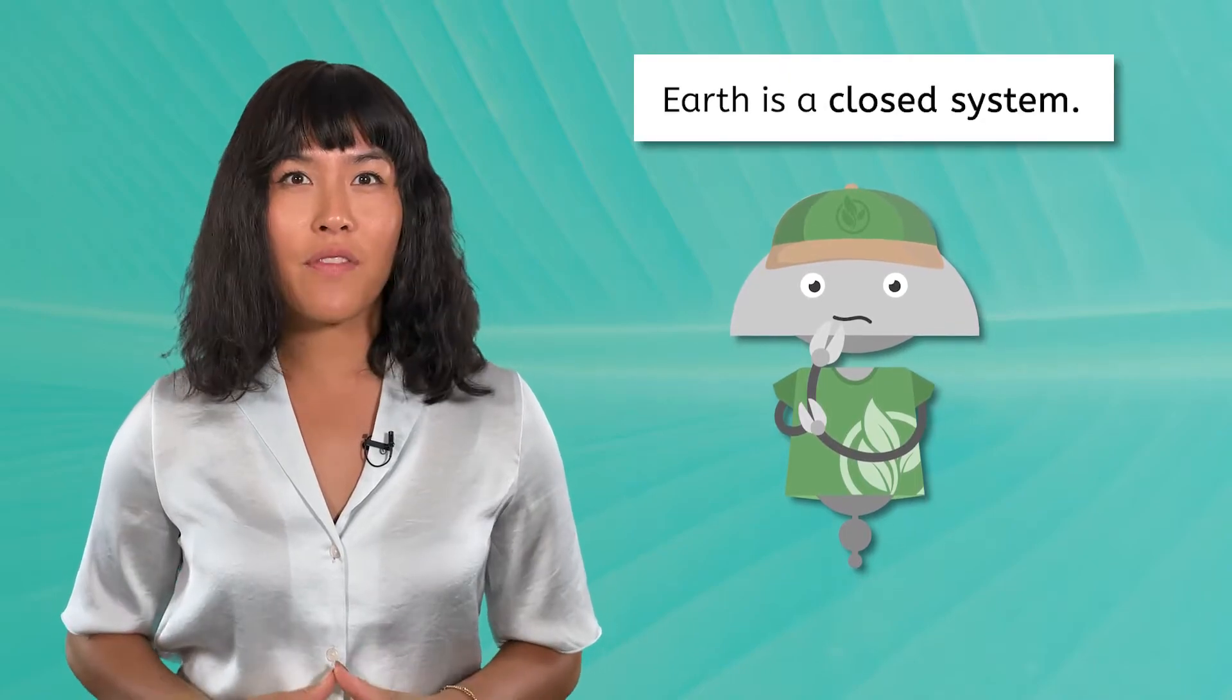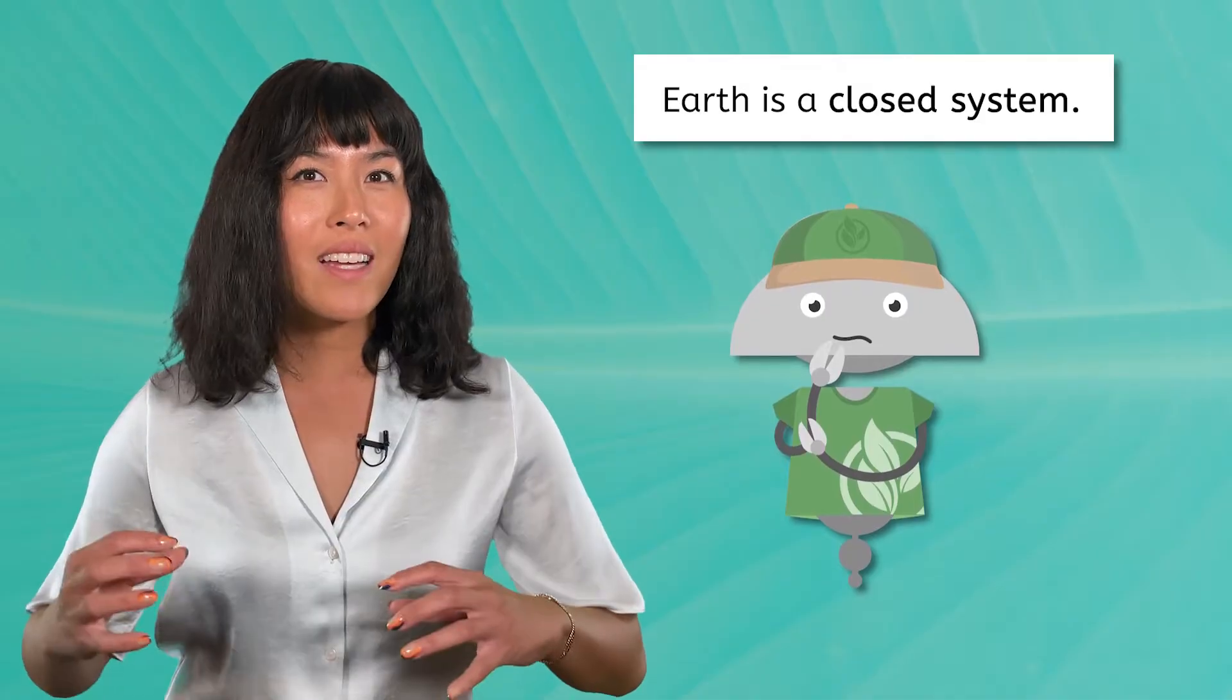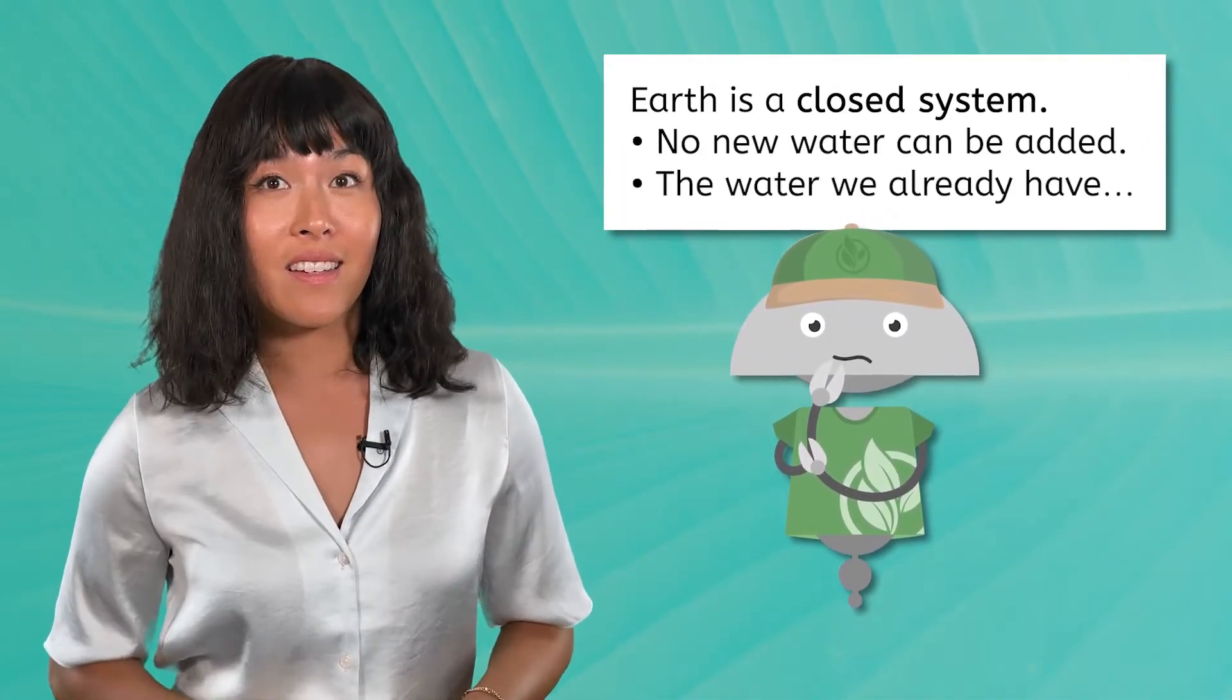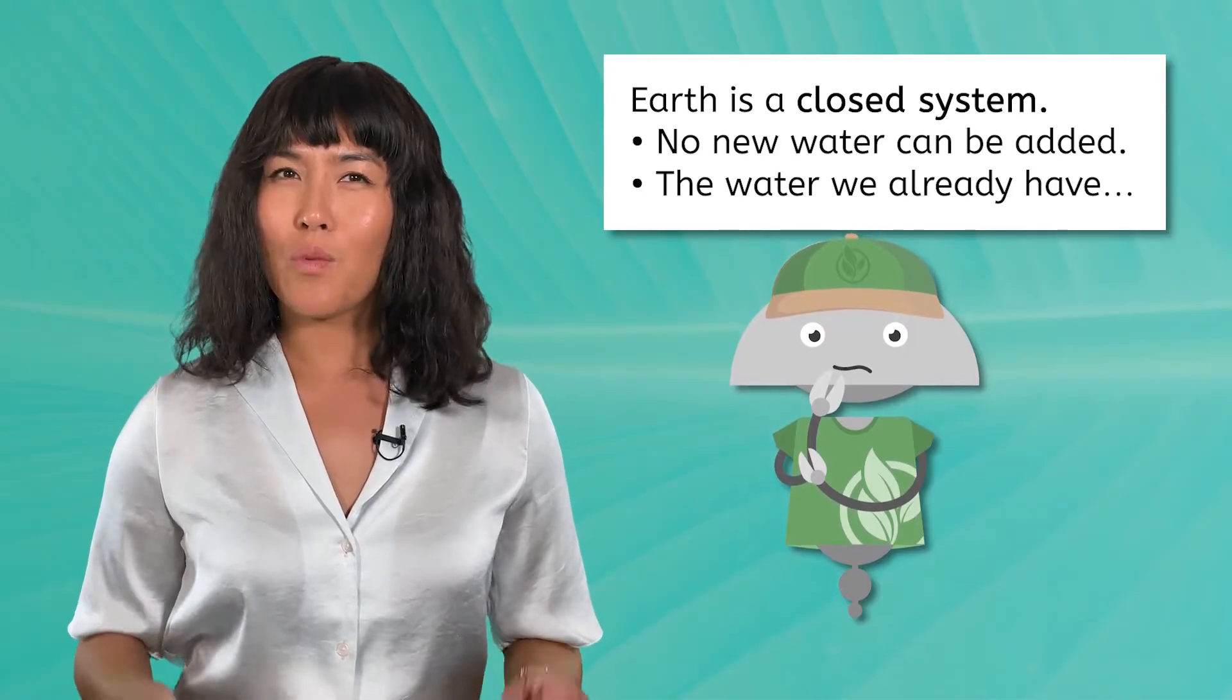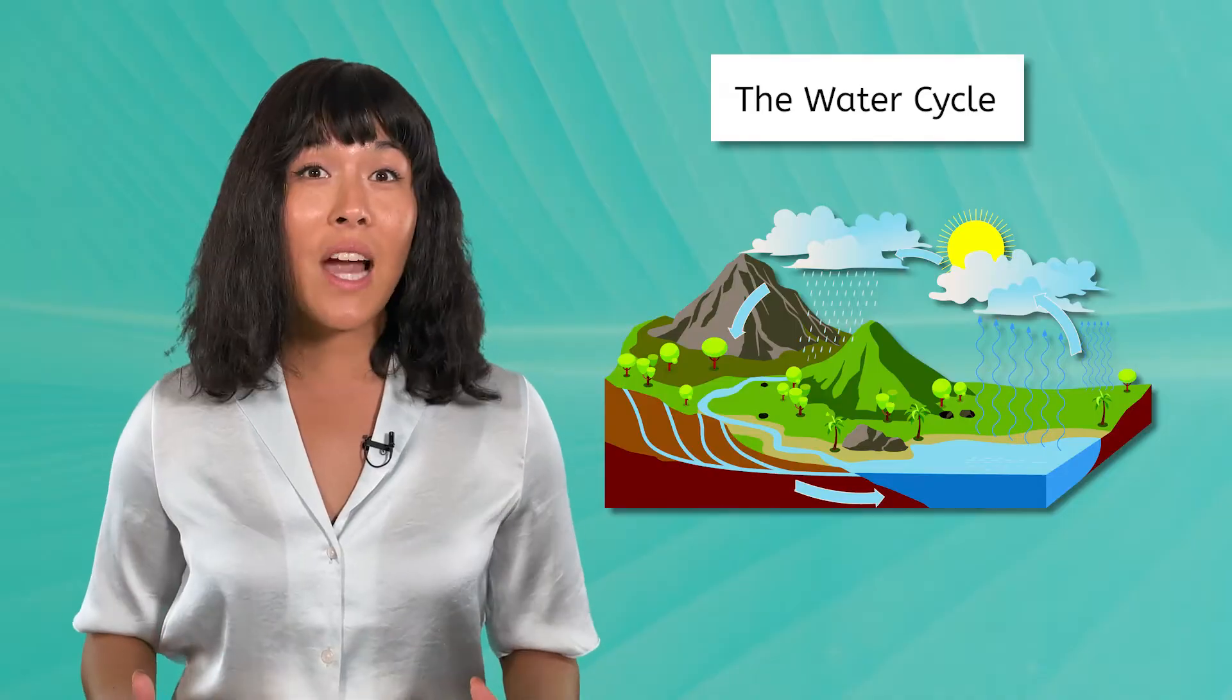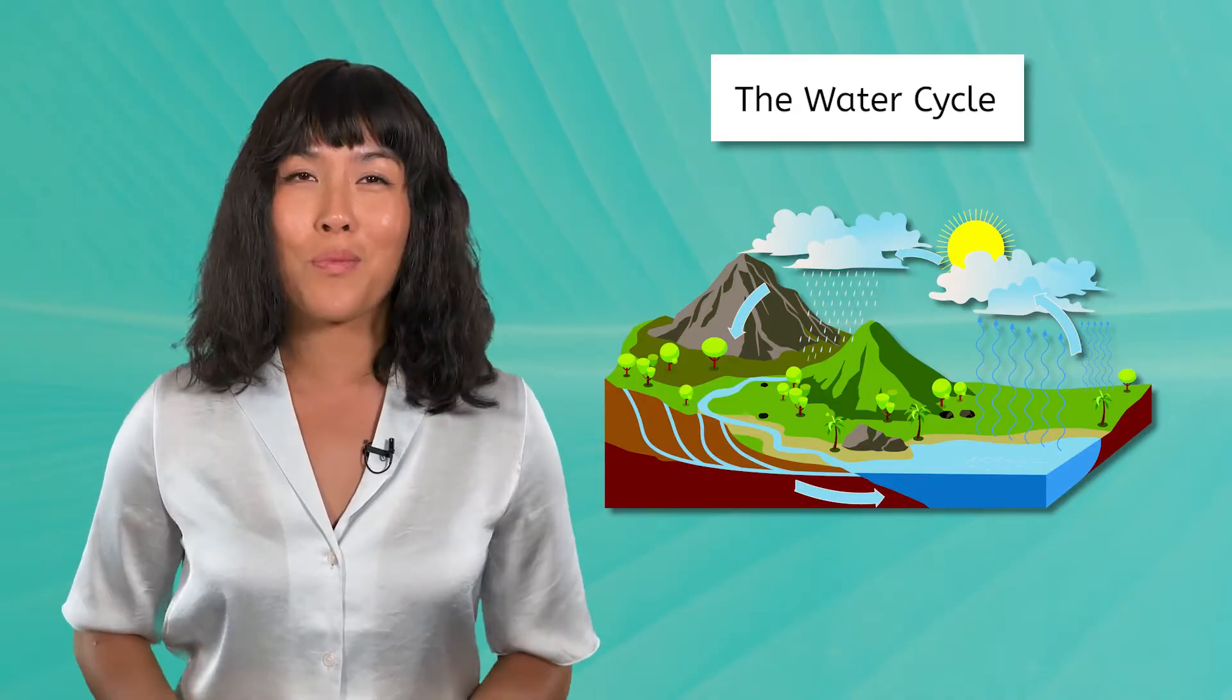There's another part to our definition of a closed system that might save us. We can't get any new water, but what about the water we've already got? Is it really gone? We'll find out in our lesson today as we learn the steps of the water cycle and see how the water cycle influences weather patterns and climate on our planet.